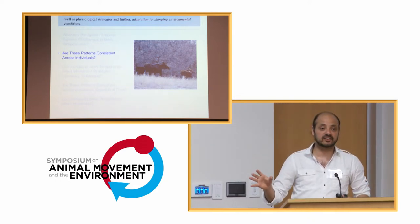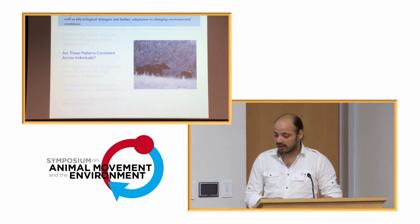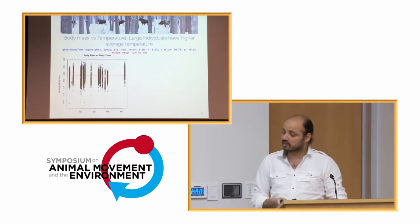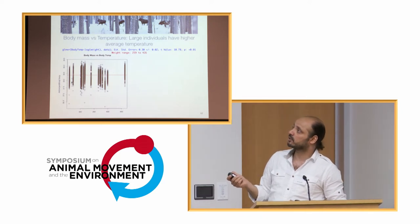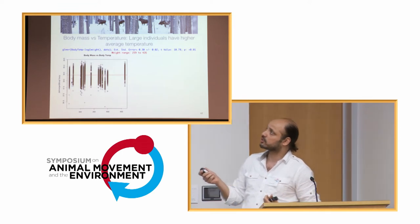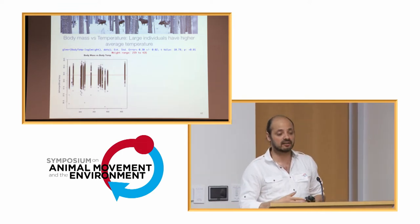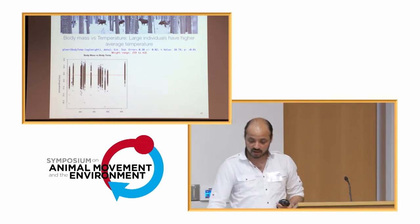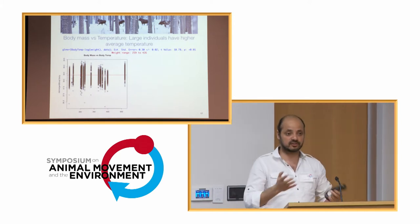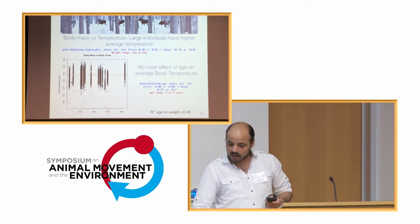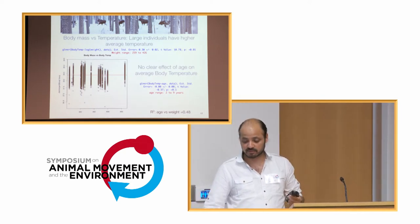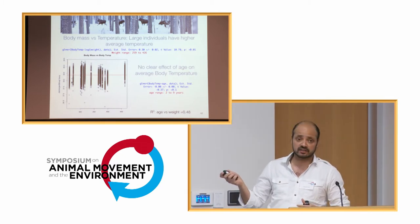Moving from general patterns to whether these are consistent across individuals: running models predicting body temperature using the weight of animals, heavier animals show higher body temperature, which makes sense — if you are larger you need to raise your temperature to thermoregulate better. There was no clear effect of age on body temperature, and after checking the correlation it was not large.